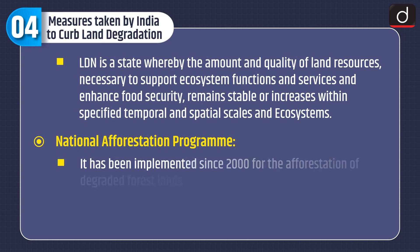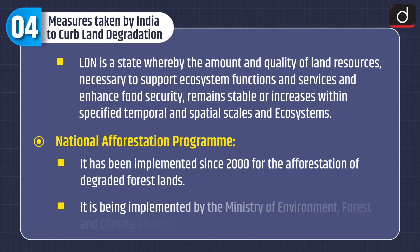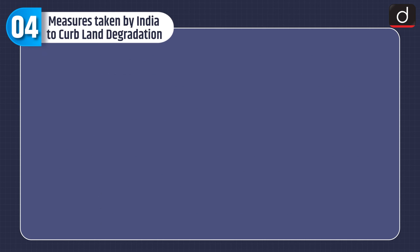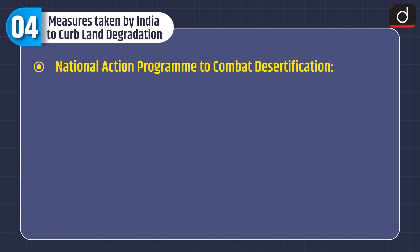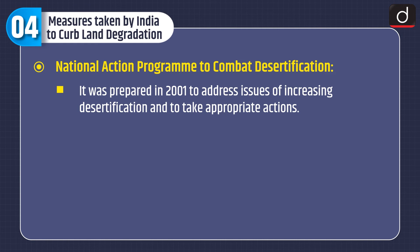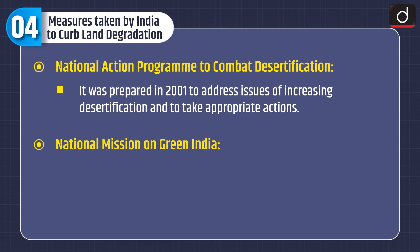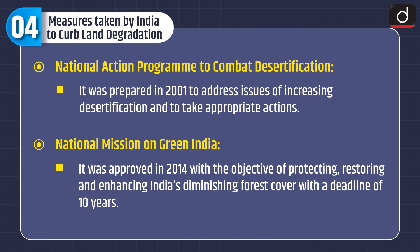Fourth is the National Afforestation Programme, implemented since 2000 for the afforestation of degraded forest lands, being implemented by the Ministry of Environment, Forest and Climate Change. Fifth is the National Action Programme to Combat Desertification, prepared in 2001 to address issues of increasing desertification and to take appropriate actions. And sixth is the National Mission on Green India, approved in 2014 with the objective of protecting, restoring, and enhancing India's diminishing forest cover with a deadline of 10 years.